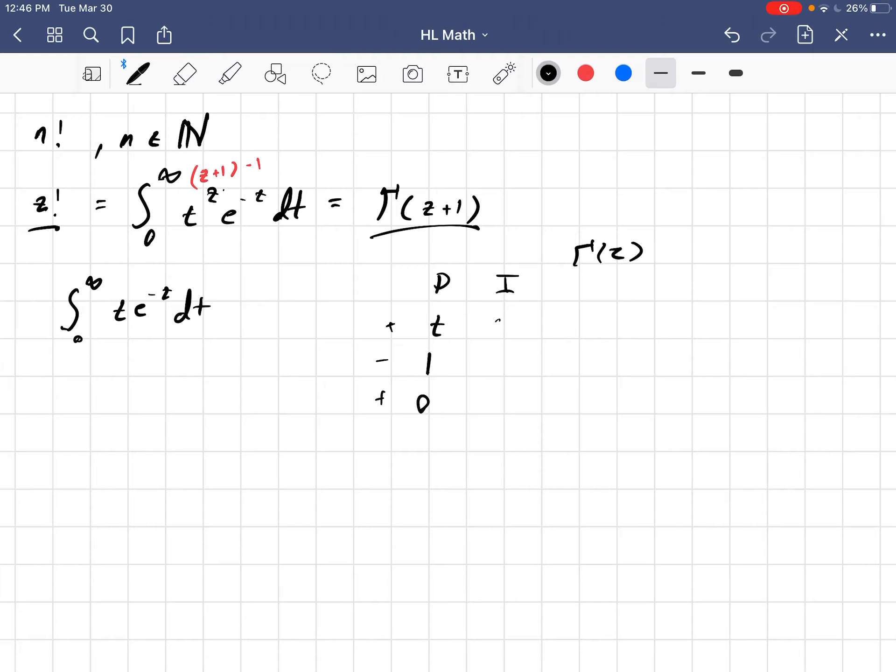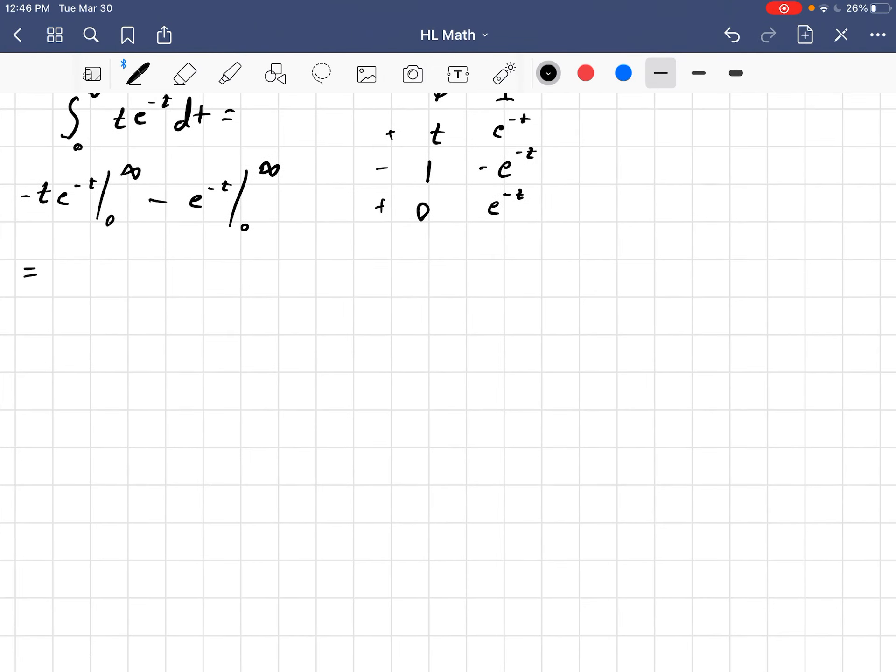So, this is a pretty standard integral through integration by parts, di plus minus plus. So, t, 1, 0, e to the minus t, minus e to the minus t, and then e to the minus t when we do that integration. Now, that means our answer becomes minus t e to the minus t minus e to the minus t from 0 to infinity.